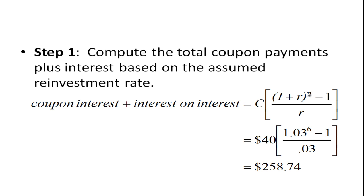So we're going to put it into this formula, 3% here, six periods here, and $40 is the coupon. And if we work it out, we get $258.74.